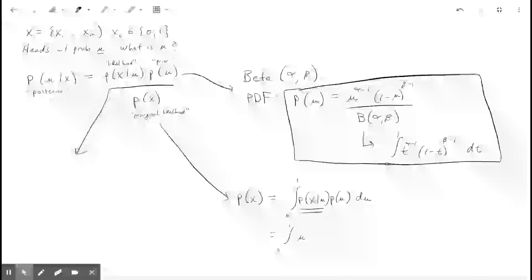So the likelihood, probability of x given mu, is equal to, and we wrote this in the last video, so just to remind you, mu to the xi times 1 minus mu to the 1 minus xi, and then i goes from 1 to all your data points, n.